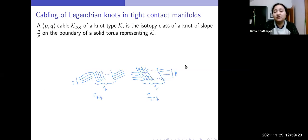Now a (p,q) cable of a knot type K is the isotopy class of the knot of slope q over p on the boundary of the solid torus that represents the knot type. And the pictures are the patterns, the positive cable pattern and the negative cable pattern.